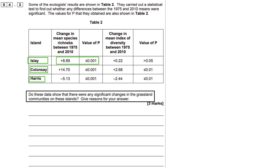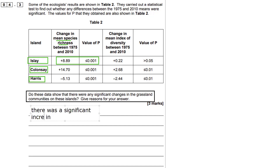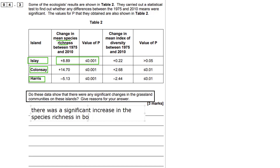There are three islands: Islay, Colinsay, and Harris. We've been given the change in mean species richness between 1975 and 2010, and we've been given the value of P. Looking at the means for those three islands in the first column, 8.89, 14.7, and minus 5.13 are the changes. So there's been a change in all three means.